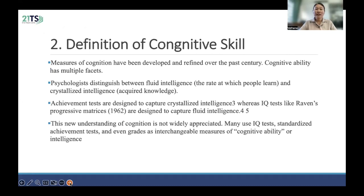Let's start with the second point, which is about the definition of cognitive skill. What does cognitive skill mean? A measure of cognition has been developed over the past century. Cognitive ability has multiple properties. In psychology, there is a distinction between fluid intelligence and crystalline intelligence. Achievement tests are designed to capture crystalline intelligence, whereas actual tests like Raven's Progressive Matrices are designed to capture fluid intelligence.